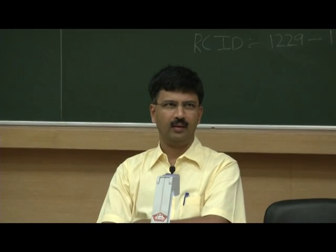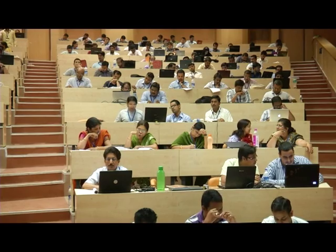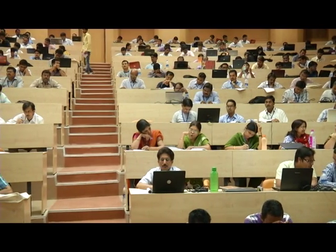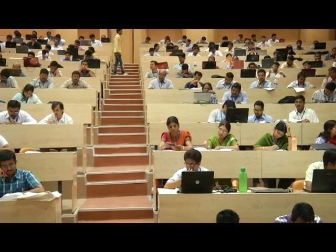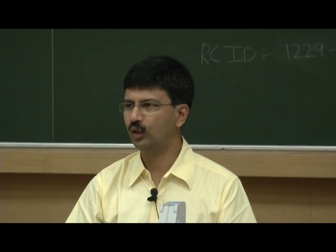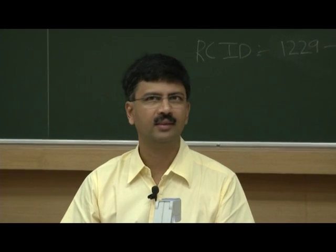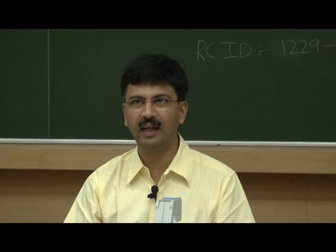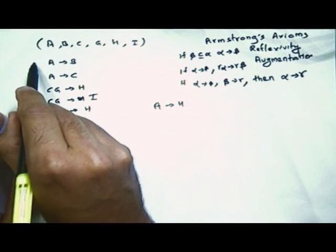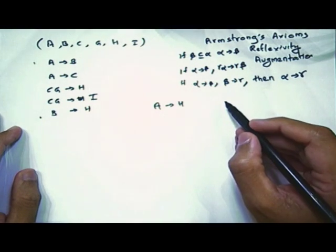There are a lot of trivial dependencies you can generate, so focus on just the non-trivial ones. For example, A determines H: because A → B and B → H, transitively A → H.